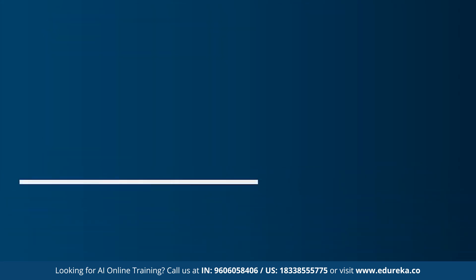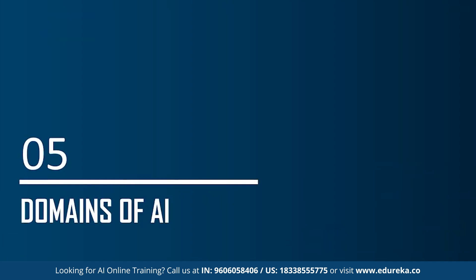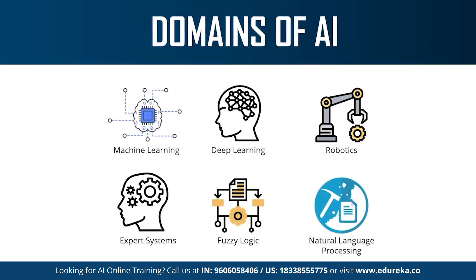Moving on to the last topic of today's session: the different domains or branches of artificial intelligence. AI can be used to solve real-world problems by implementing machine learning, deep learning, natural language processing, robotics, expert systems, and fuzzy logic. These are the different branches that AI uses to solve any problem. Recently AI has also been applied in computer vision and image processing.